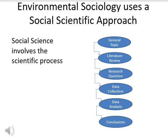Since environmental sociology is a social science, it's important to understand what that means. The general process of social science starts with a topic — in this case an environmental problem — then we conduct literature reviews looking at other studies on that topic. From there, we identify remaining research questions and design our own study: we collect data, analyze the data, draw conclusions, and usually those conclusions evaluate the research questions formulated after reading the literature.